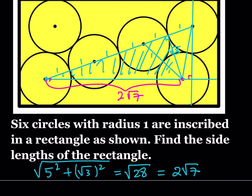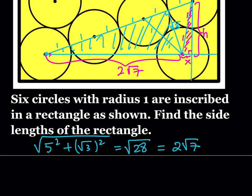I have another right triangle here. We don't know the height of that, so let's call this H. And I don't know the base either — let's call that X. We have another right triangle where these are one, so the hypotenuse is going to be two. We can use the Pythagorean theorem in this skinny right triangle. So X squared plus H squared is equal to two squared, which is four.